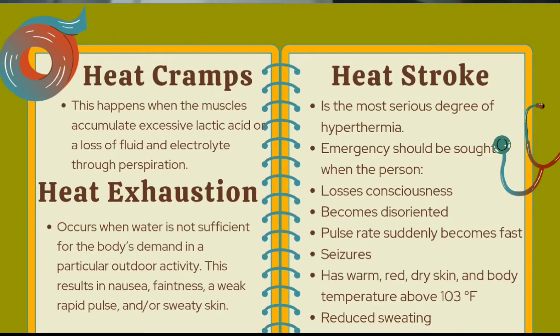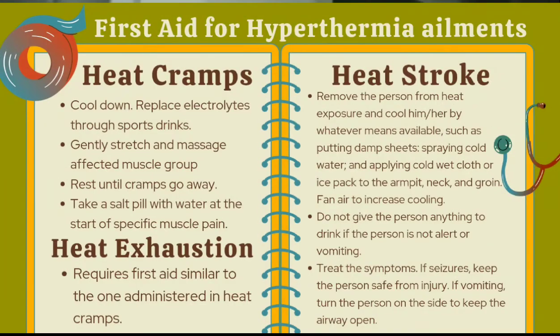Another ailment is hyperthermia. Heat cramps occur when there is excessive loss of electrolytes through perspiration. What must be done: replenish electrolytes, gently stretch and massage the affected muscle area, do not resume strenuous activity until the cramps go away, and take a salt pill with water at the start of specific muscle pain.